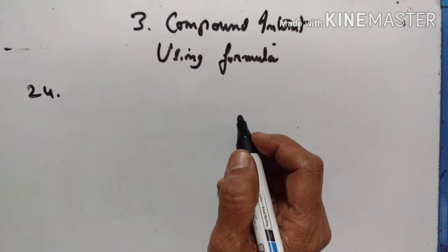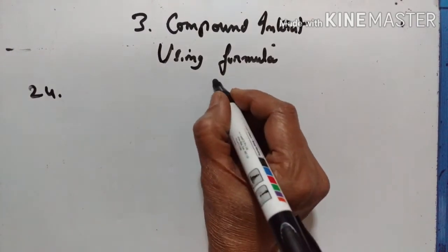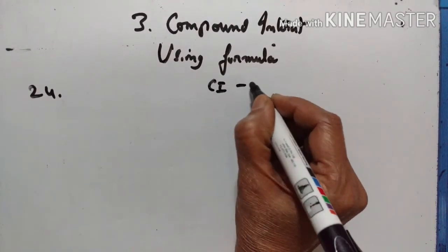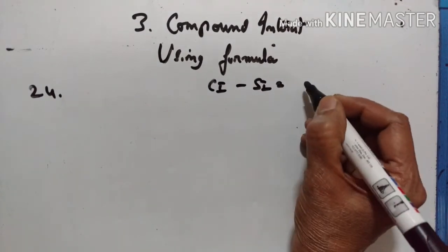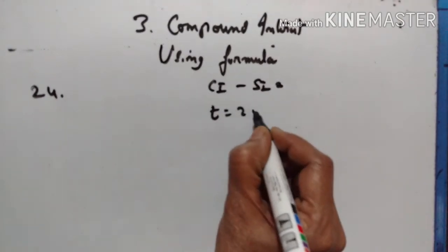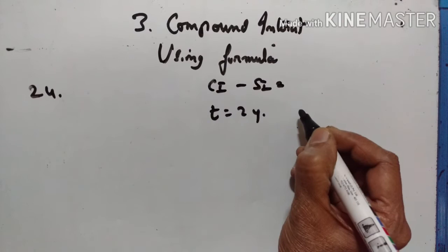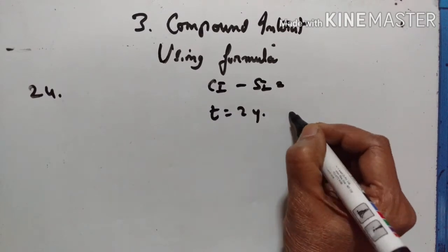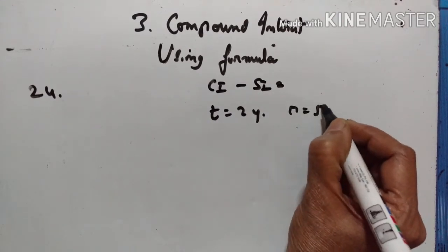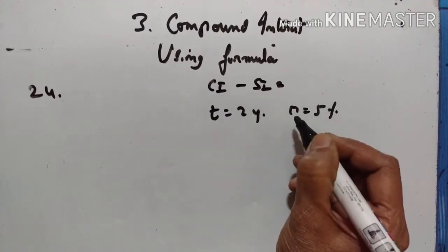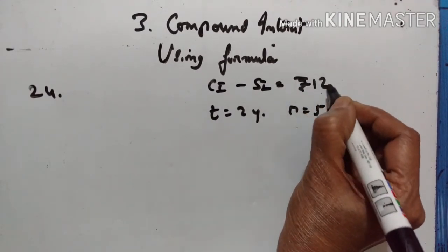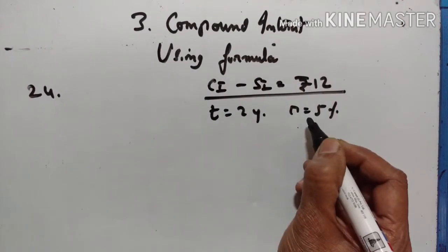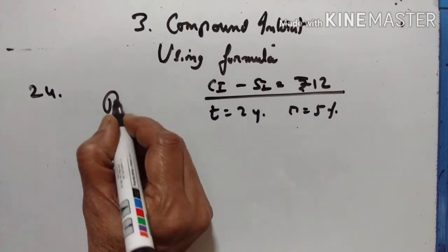24th problem. The difference between compound interest and simple interest on a sum of money deposited for 2 years at 5% per annum is rupees 12. Find the sum.